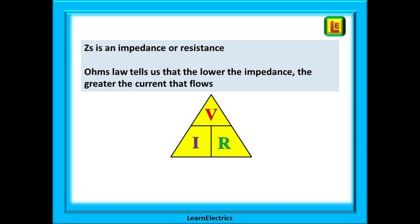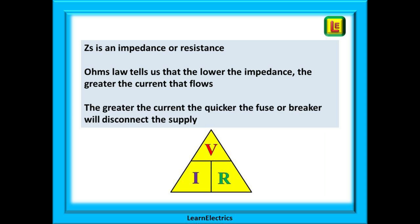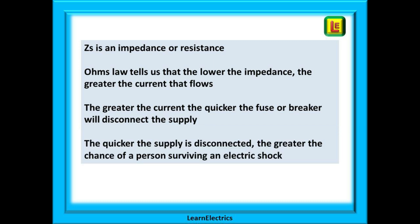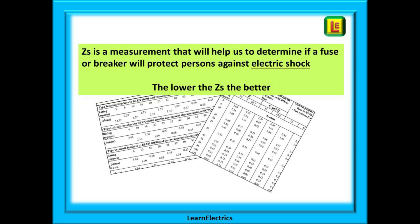Ohm's law tells us that the lower the impedance, the greater the current that flows. The greater the current that flows, the quicker the fuse or breaker will disconnect the supply. The quicker the supply is disconnected, the greater the chance of a person surviving an electric shock — and we want big currents to flow during the fault. ZS is a measurement that will help us determine if a fuse or breaker will protect persons against the dangers of an electric shock during a fault. The lower the ZS the better, because this means bigger fault currents.